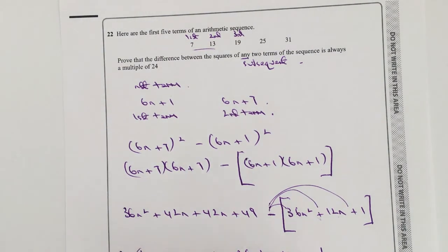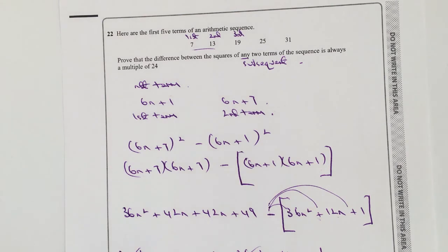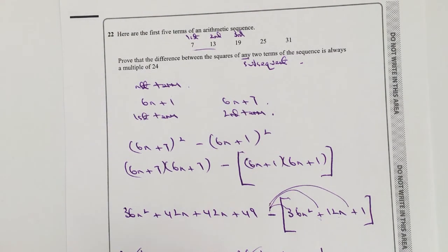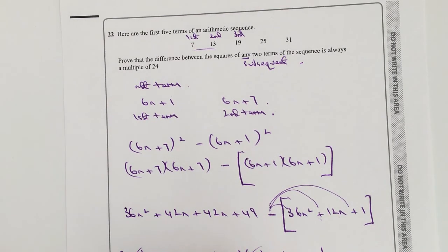So what I end up with then is losing quite a lot of this information here. So what I end up with is 84n minus 12n, well that's going to be 72n, and I've got plus 49 minus 1 is plus 48.